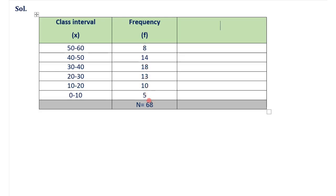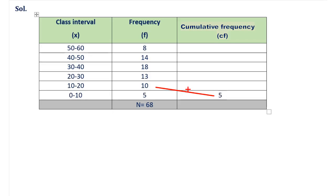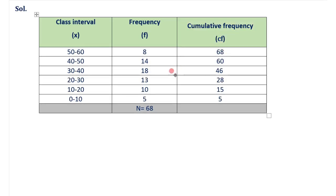Now we will calculate the cumulative frequency (CF). Since our class intervals are in descending order, we will calculate cumulative frequencies from the bottom upward, called upward cumulative. The first value is 5, so write 5. Next: 5 + 10 = 15. Then 15 + 13 = 28. Then 28 + 18 = 46. Then 46 + 14 = 60. And 60 + 8 = 68. The top cumulative frequency should match N; if it doesn't, you've made an error.